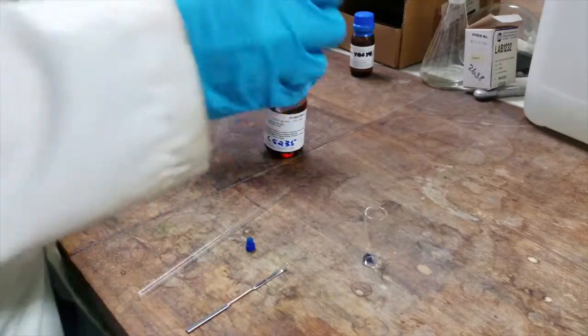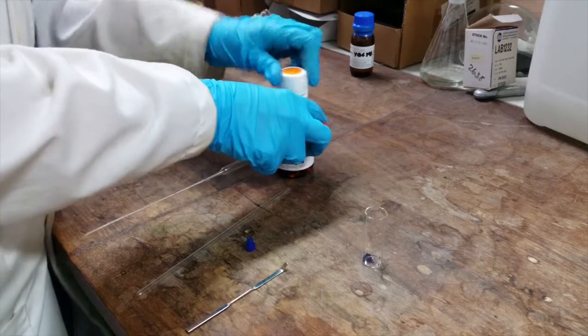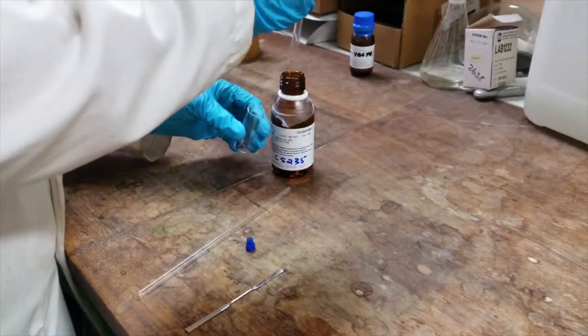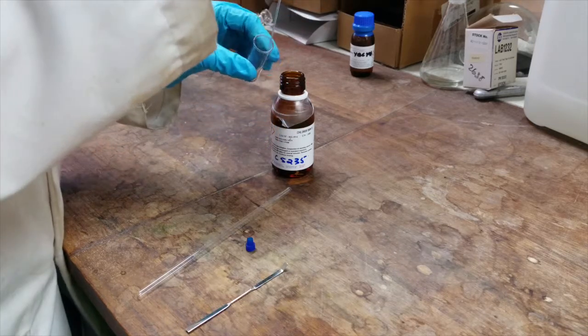Now add a small amount of your deuterated solvent to your sample. You'll need around one pipette full for each 10mg of your sample. Ensure that you do not contaminate the deuterated solvent as you're adding it to your sample.